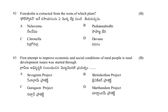Forskolin is extracted from the roots of which plant? Options: nela vemu, Pashana bedi, citronella, or davana. The answer is Pashana bedi.